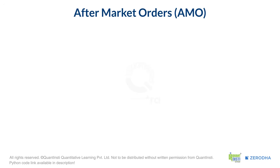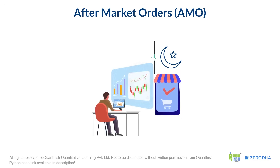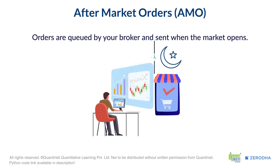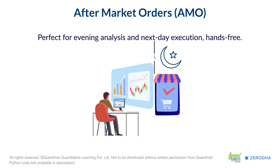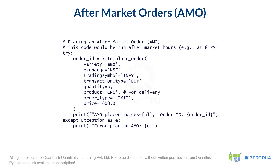Next up is the after market order, or AMO. This does exactly what it says — it lets you place orders after the market has closed. These orders are collected by the broker and sent to the exchange the next morning when the market opens. It's perfect if you've done your analysis in the evening and want to have your order ready for the next day without having to be at your screen. The code is a standard place order call, just with a different variety — simply change the variety to AMO and you're all set for the next trading session.